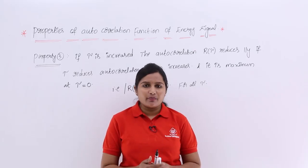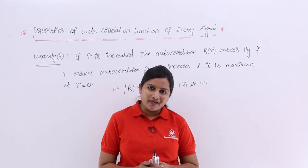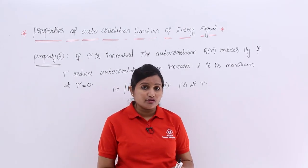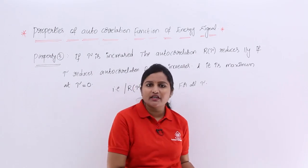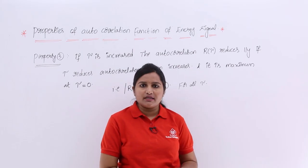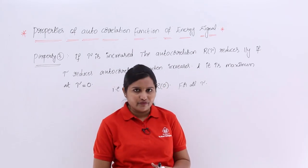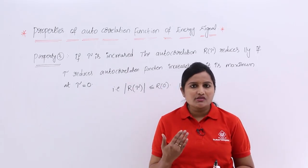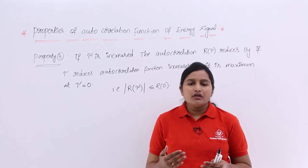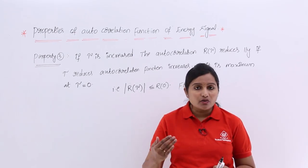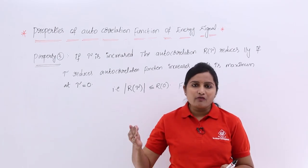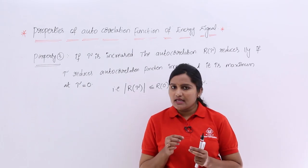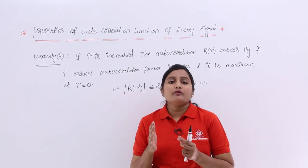In this video we are going to discuss the third property of the autocorrelation function of an energy signal. The same property applies to the autocorrelation function of a power signal as well, though I will not give a proof there — just a listing of properties. Property number 3 states that if tau, the delay parameter, increases, the autocorrelation function decreases, and if tau decreases, the autocorrelation function increases, with a maximum at tau equal to 0.